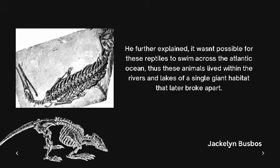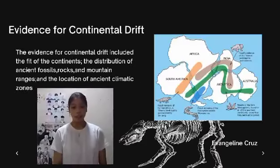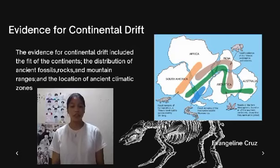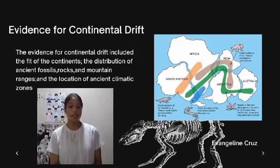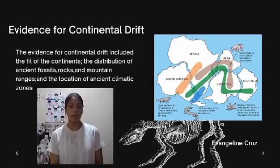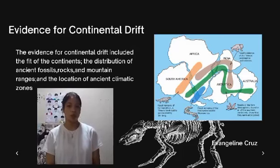Thus, we can say that these animals lived within the rivers and lakes of a single giant habitat that later broke apart. The evidence for continental drift included the fit of the continents, the distribution of ancient fossils, rocks, mountain ranges, and the location of ancient climatic zones.